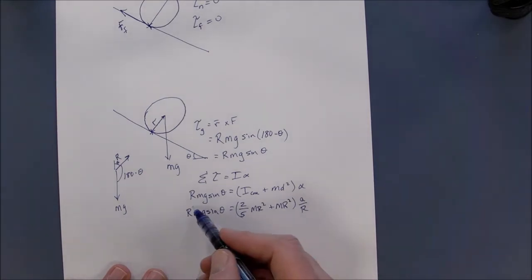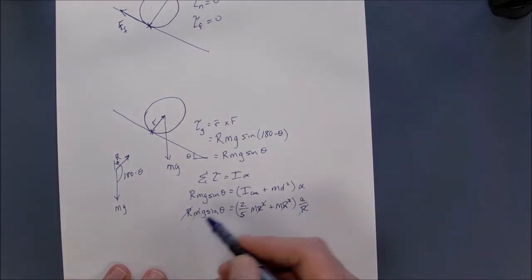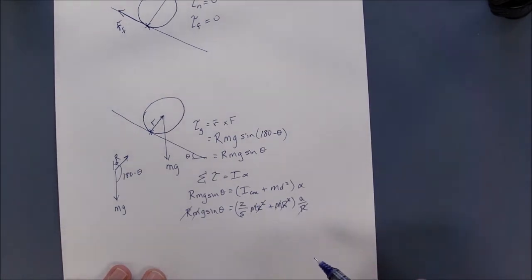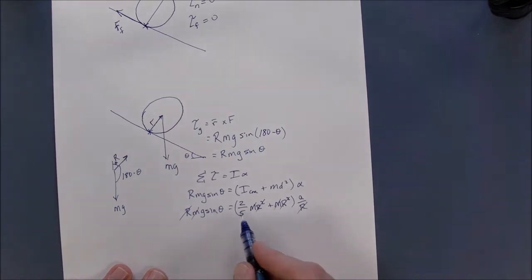If you look carefully, all your R's will cross out. Your M's will cross out. And you'll get that A, this over here,